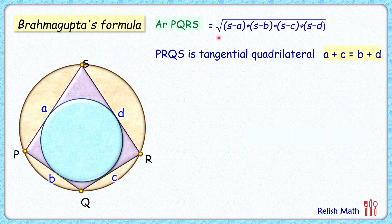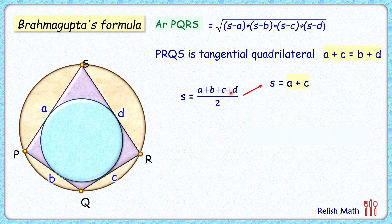Now if we check the semi-perimeter — semi-perimeter is the sum of all sides divided by 2. If we replace b + d with a + c, the semi-perimeter becomes 2(a + c) / 2 = a + c. Similarly, replacing a + c with b + d, we get semi-perimeter = b + d.